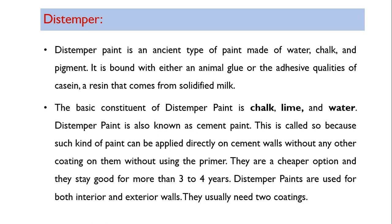Such paint can be applied directly on cement walls without any other coating — no primer is needed for application of distemper on the wall, which is why it is called cement paint. It can be directly applied on cement surfaces. They are a cheaper, very economical option and stay good for more than three to five years.